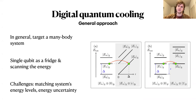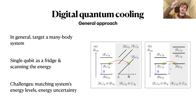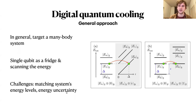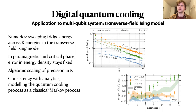Since we can't probe all energies with a qubit, we probe multiple energies and use the energy uncertainty to probe energy intervals with some width — by performing a time-dependent evolution rather than exact energy conservation. You need to break energy conservation slightly to reproduce the continuous bath with a single qubit. The challenges are matching energy levels and managing energy uncertainty, which is both a challenge and an asset. Analytically this is quite hard; you can model the process as a classical Markov process, ignoring coherences between energy eigenstates.